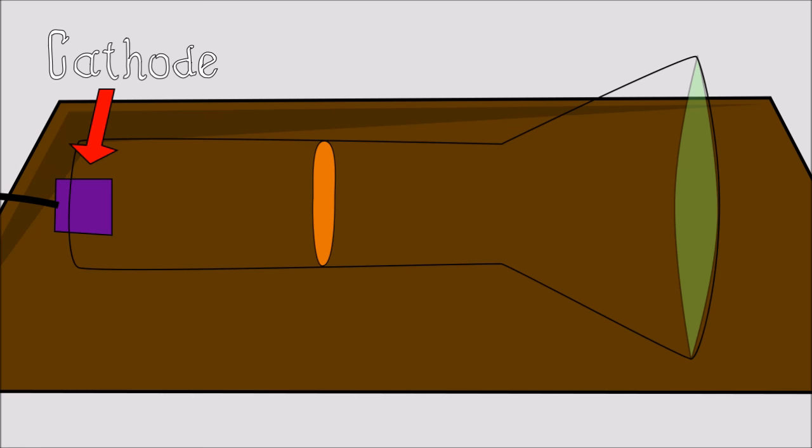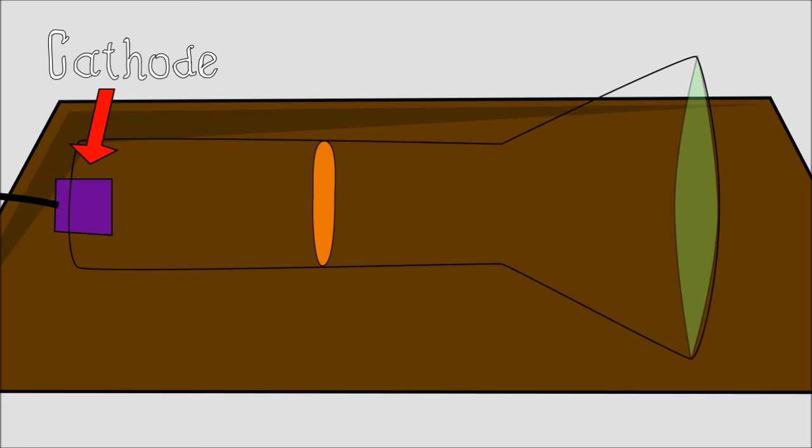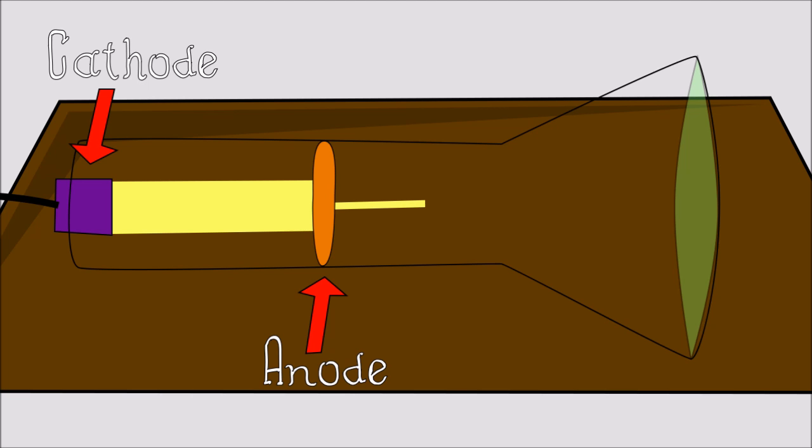An electron gun is made of a cathode, which is heated to emit electrons, and an anode, which focuses the electrons into a thin beam. This beam easily travels through the vacuum and is illuminated by a screen coated in a fluorescent substance.